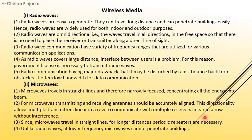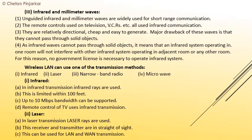Microwaves travel in one straight line, which is why repeaters are needed over longer distances. Unlike radio waves at low frequency, microwaves cannot penetrate buildings. At low frequency, penetration through buildings is not possible.